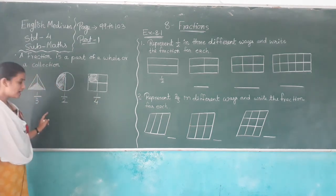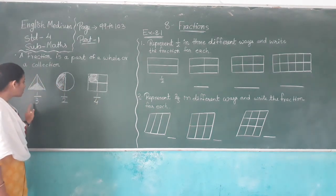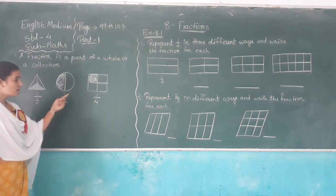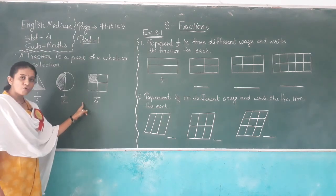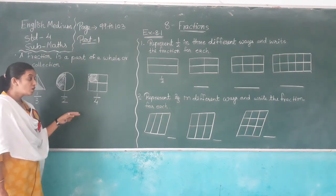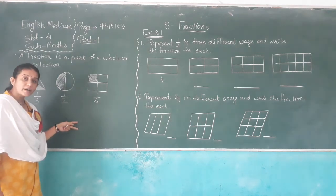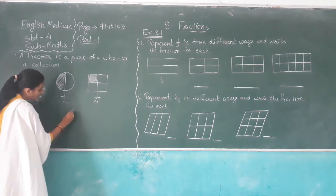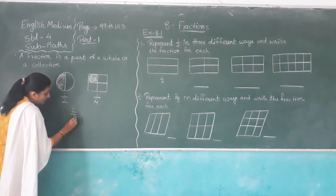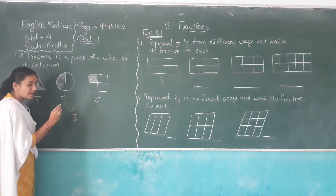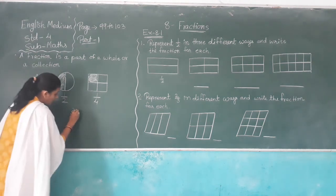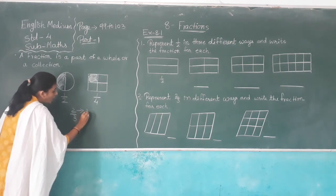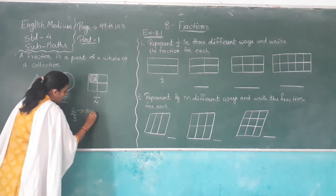Read as one third, one half, one fourth, one fifth, two third. One third means two out of three — two third. The upper side digit is called the numerator.